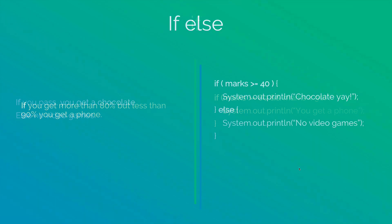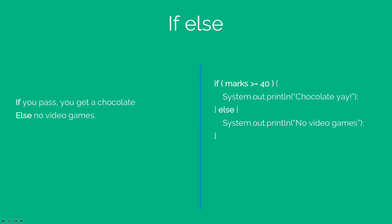Now let's go one step further and try to add an alternative as well. In this case, if you pass you get a chocolate, otherwise no video games. So let's say we have the variable called marks. I am going to check the value of this variable. If that value is greater than 40, then the first print statement will run. Otherwise, the second print statement will run. The idea is that only one of these print statements is going to run at a given time.